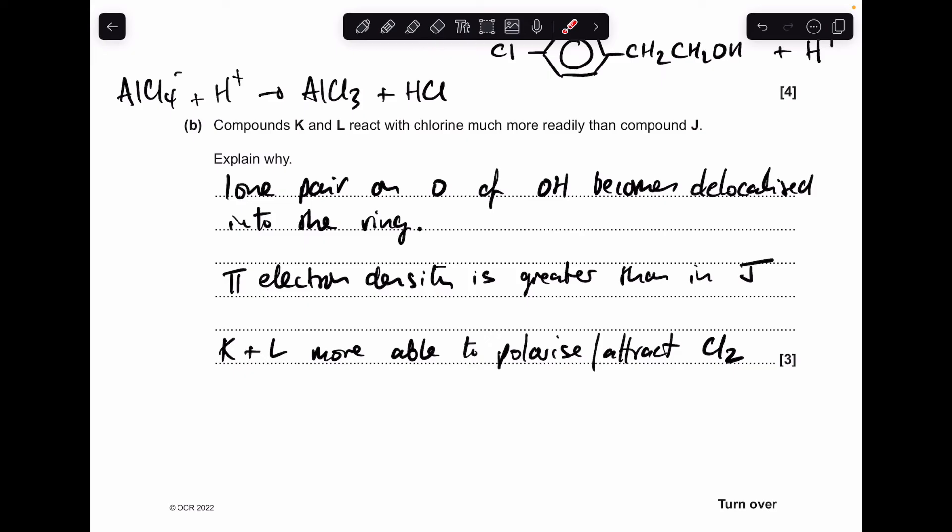Moving on to part B, K and L react with chlorine more readily than J. That's because they're both phenols. The lone pair on the oxygen of the OH group becomes delocalised into the ring, that means the pi electron density is greater in K and L than in J, so K and L are more able to polarise, or you could say attract the chlorine molecule.